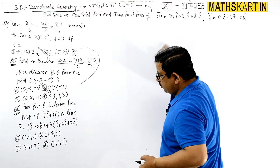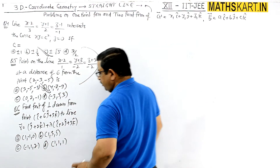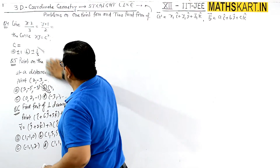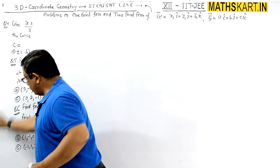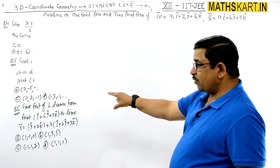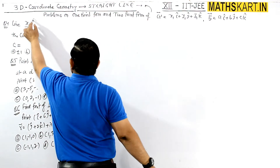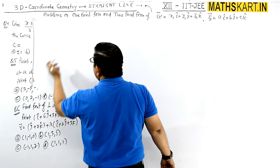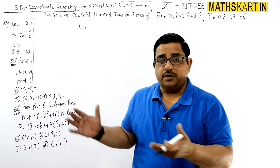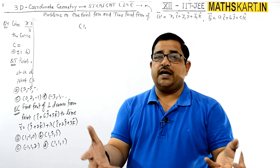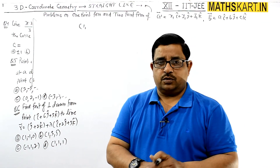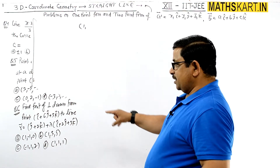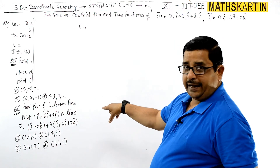After this, question number 6: find the foot of perpendicular drawn from the point to the line. This is the same type of question we have been doing. So, foot of the perpendicular drawn from the point — one approach is that if the line is given in vector form, we convert it to Cartesian form, because Cartesian form is easier for us. So let's go straight to Cartesian form and solve from there.